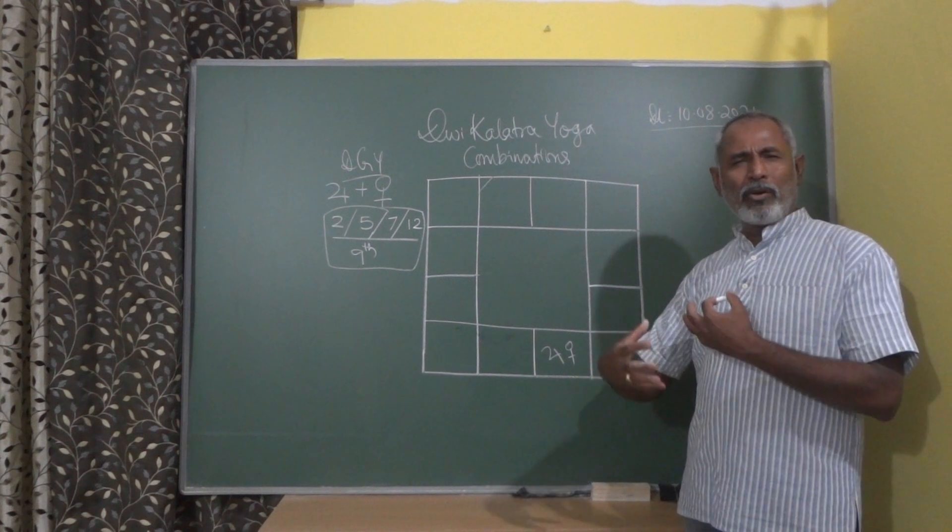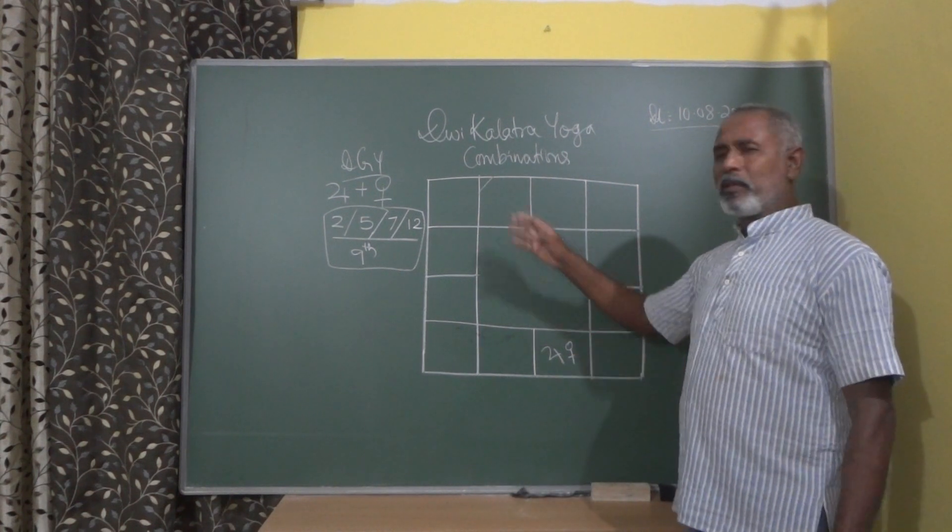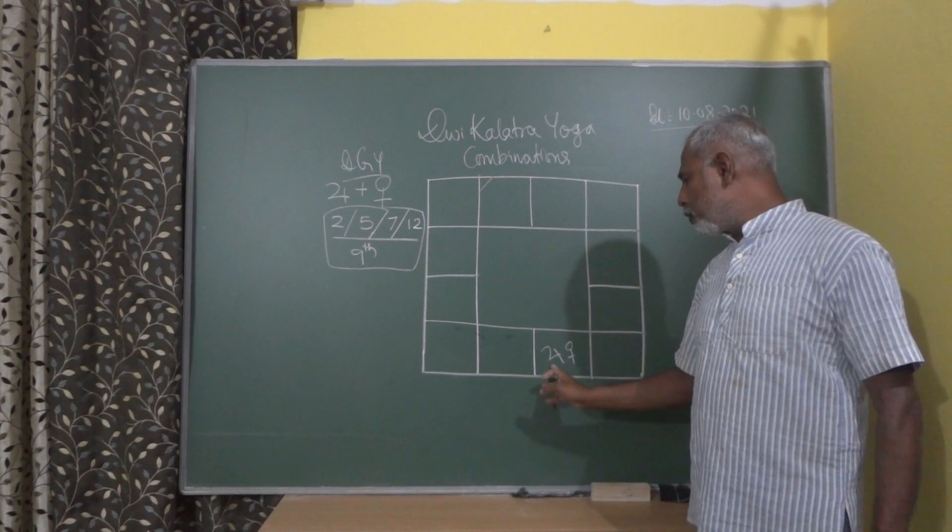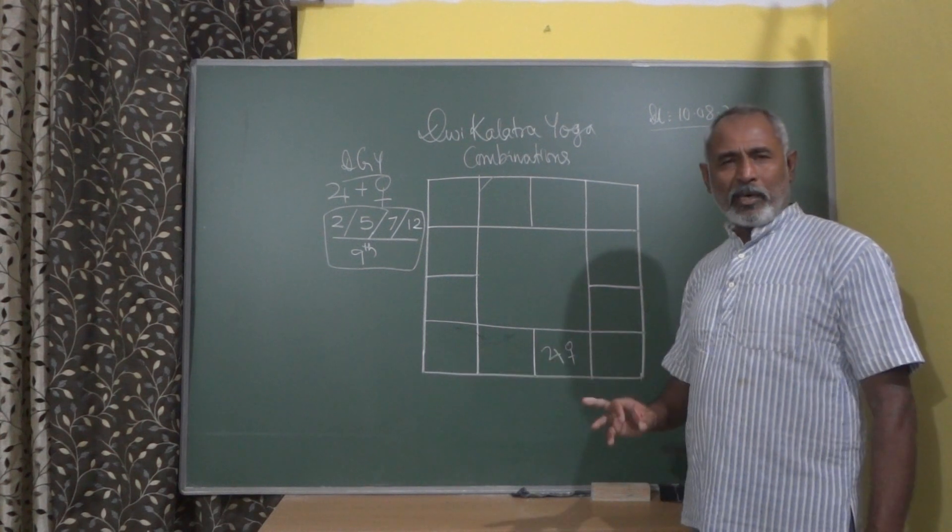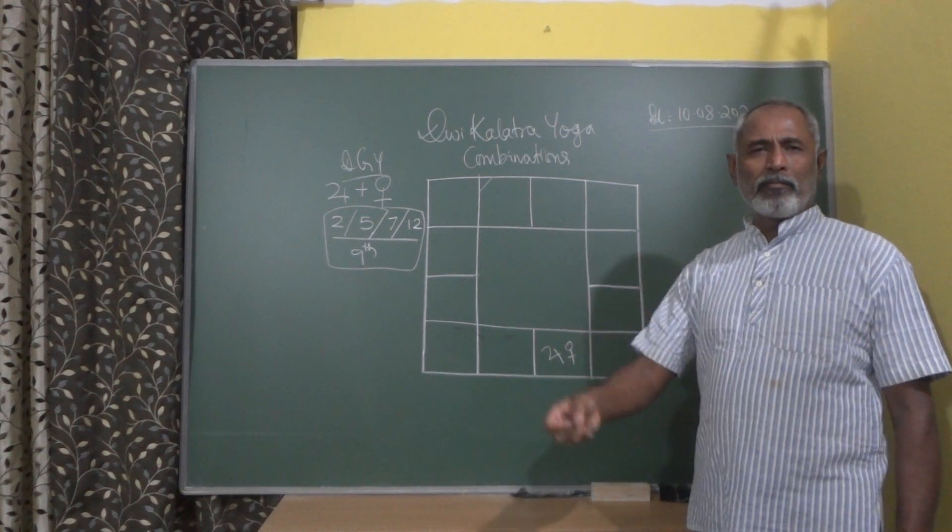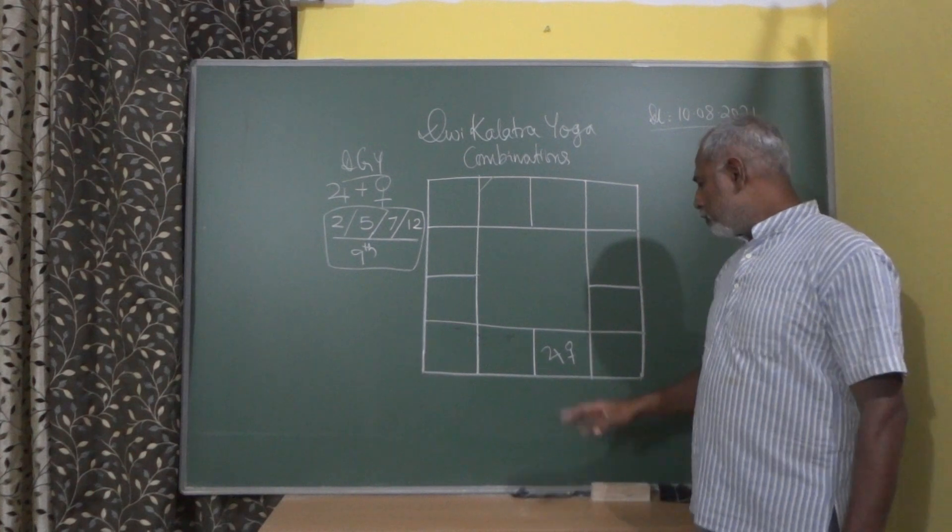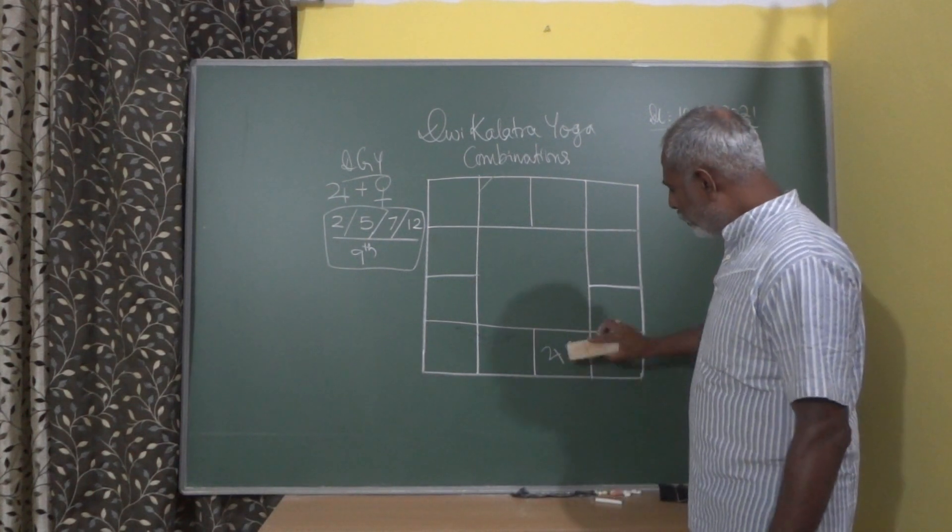this constitutes to a very strong Dvikalatra Yoga, because Jupiter is also the 9th lord. 9th lord in the 7th house has a strong aspect over the ascendant, and so it will play its role in its Dasha and its sub-periods also. So this is also one sort of a Dvikalatra Yoga.